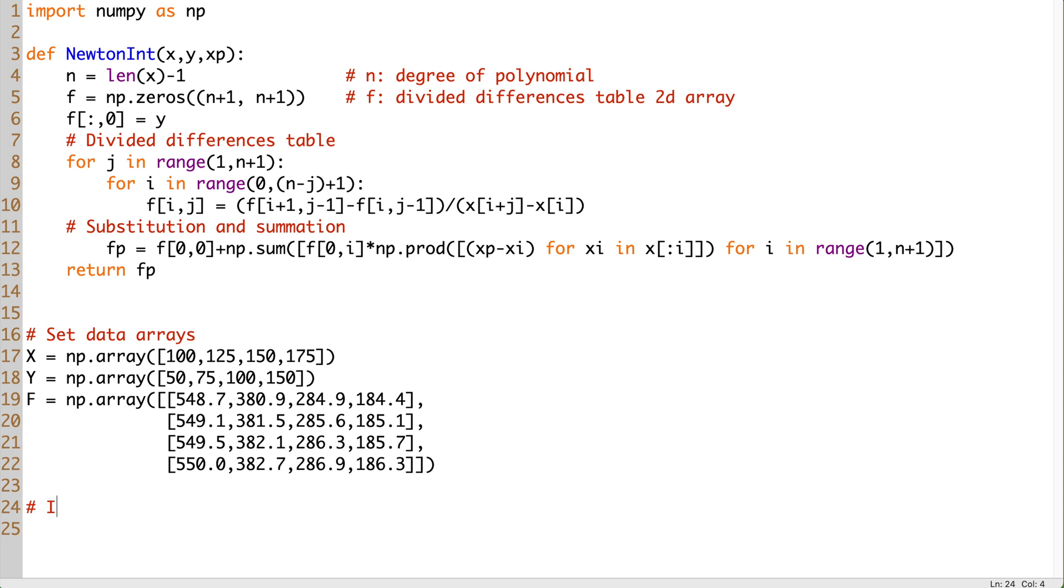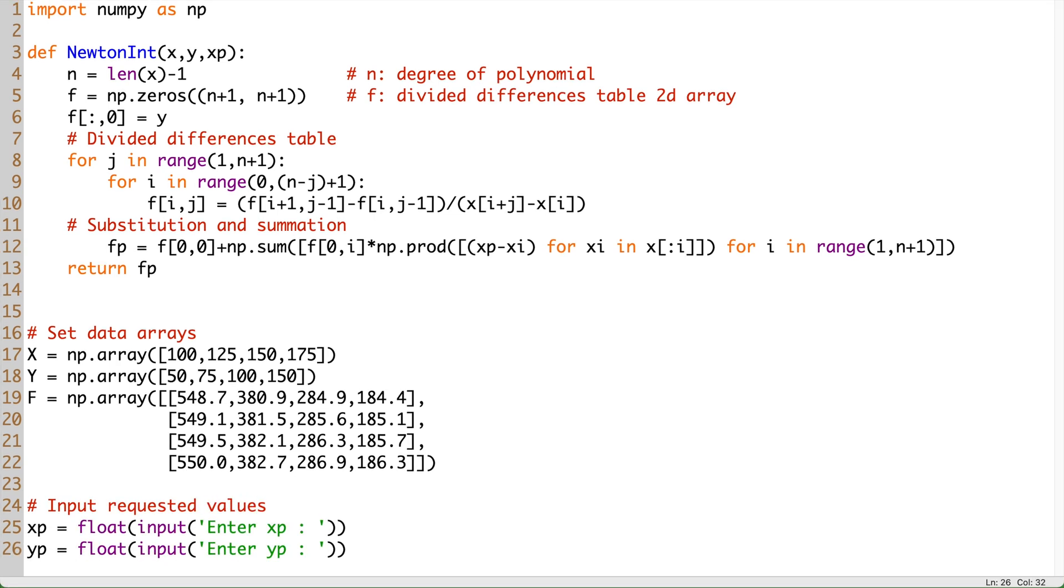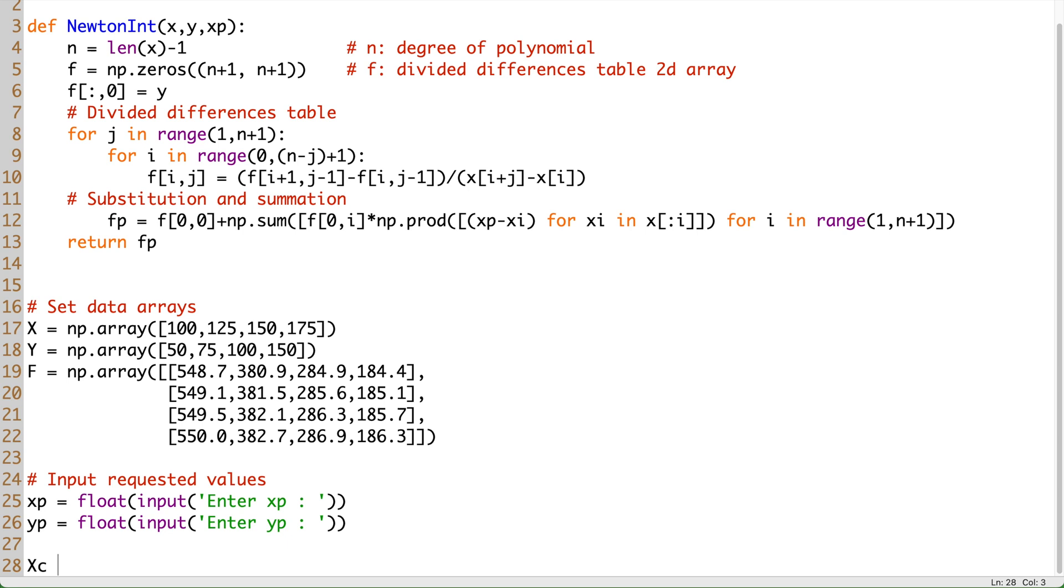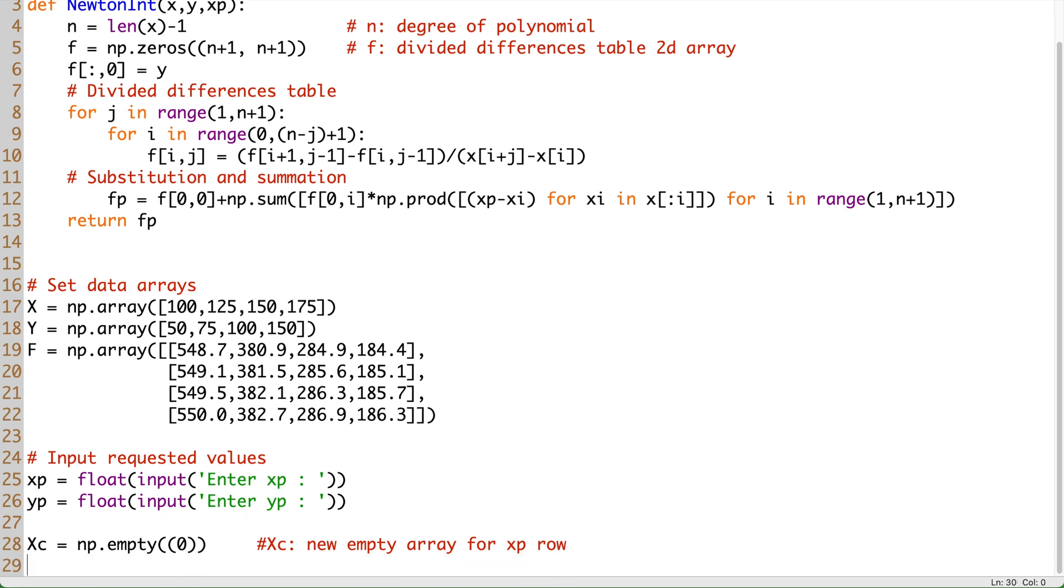Next, by using the input function, the code will ask the user to enter the values of xp and yp. Next, we create a new array called xc with size zero. In other words, an empty container.